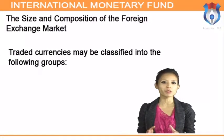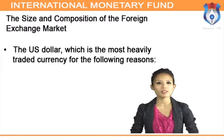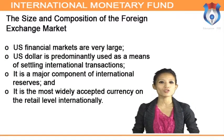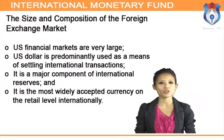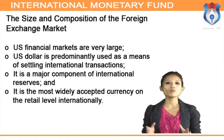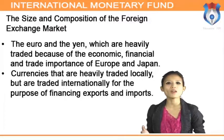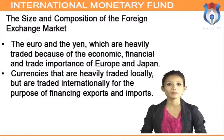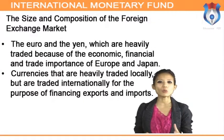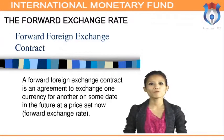Traded currencies may be classified into the following groups. The US dollar is the most heavily traded currency because US financial markets are very large, the US dollar is predominantly used as a means of settling international transactions, it is a major component of international reserves, and it is the most widely accepted currency at the retail level internationally. The euro and the yen are heavily traded because of the economic, financial, and trade policy of Europe and Japan. Some currencies are traded locally but also internationally for the purpose of financing exports and imports.